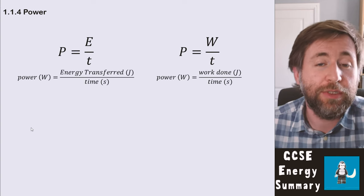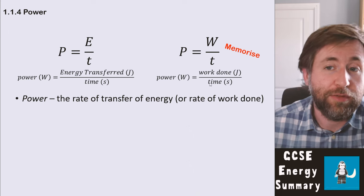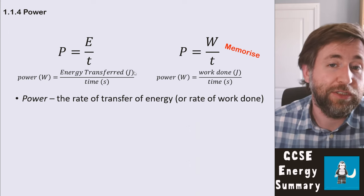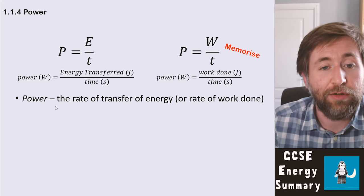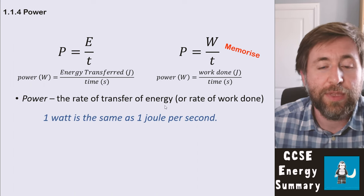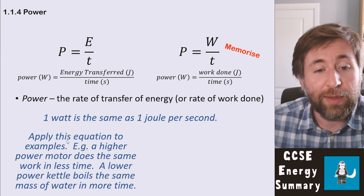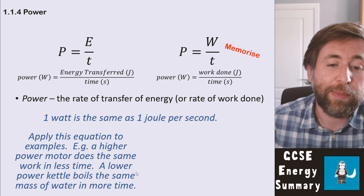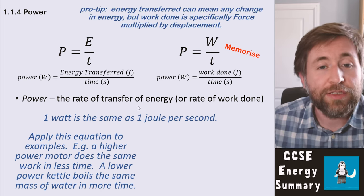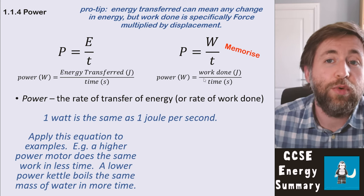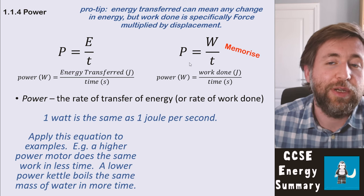Power is defined as the rate at which energy is transferred or the rate at which work is done. There are two equations: P = energy transferred / time, or P = work done / time. Think of it this way: the watt is a joule per second. Something with a higher power does the same amount of work in less time. Work done specifically means force multiplied by displacement, which is why we have a separate equation for power as work done over time.